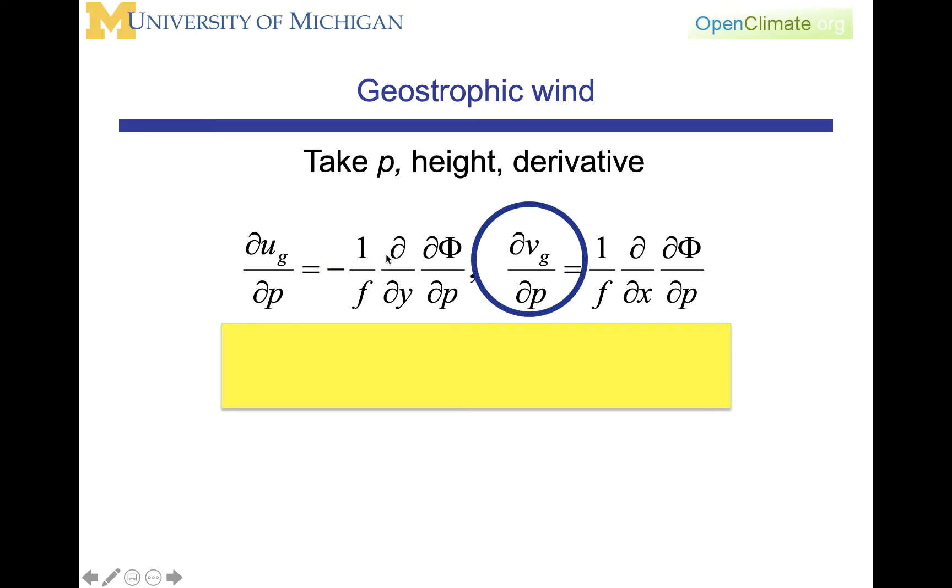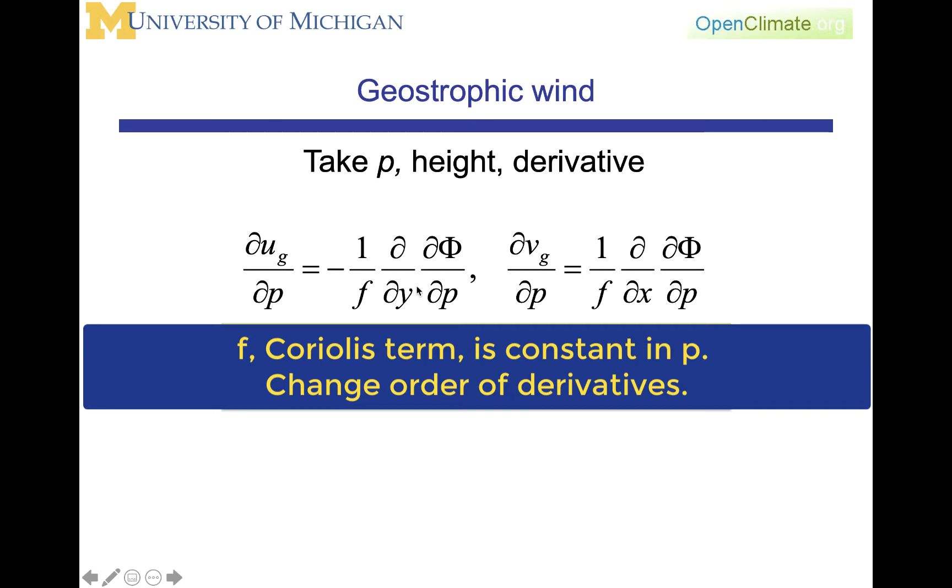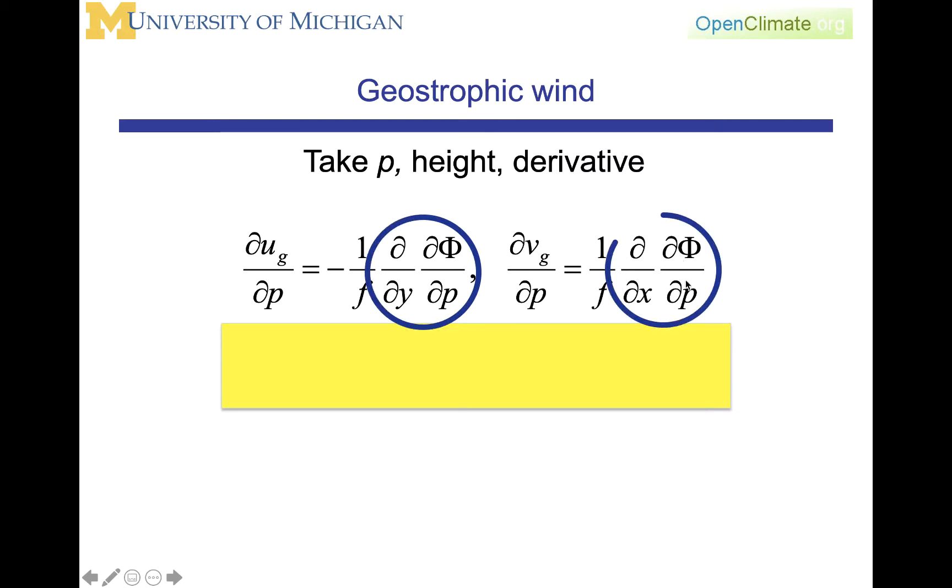The f is a constant with respect to pressure under all circumstances. Then we can change the order of the operation of the derivatives, and we get d by dy of d phi dp and d by dx of d phi dp.